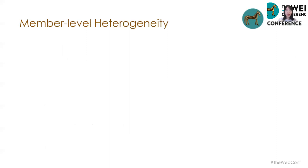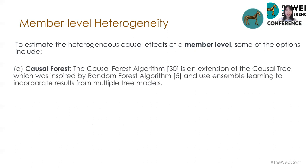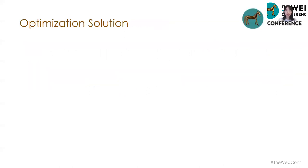Now let's look at member-level heterogeneity. There are many methods that can be used to estimate causal effects at a member level. Some options are causal forest, which is an extension of causal tree inspired by the random forest algorithm and uses ensemble learning to incorporate results from multiple models; and the two-model approach, which is a baseline method that models the causal effect through the difference of predicted responses from treatment and control models. With these estimations obtained, we can move on to the optimization stage.